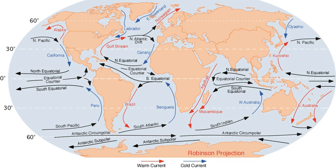Depth contours, shoreline configurations, and interactions with other currents influence a current's direction and strength. Ocean currents are primarily horizontal water movements. Ocean currents flow for great distances, and together create the global conveyor belt, which plays a dominant role in determining the climate of many of the Earth's regions.